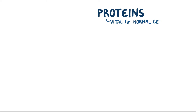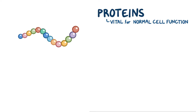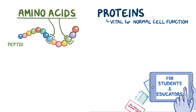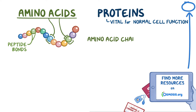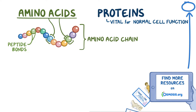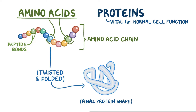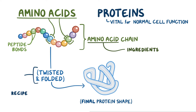Proteins are vital for the normal function of a cell. Essentially, a protein is, at its simplest, a very long chain of individual units called amino acids, bound to each other by peptide bonds to form an amino acid chain. They sort of resemble a string of beads, and they get twisted and folded into a final protein shape. To make a protein, we need to know two things: the ingredients, which are the amino acids, and the recipe, or how the finished amino acid chain folds into the protein.